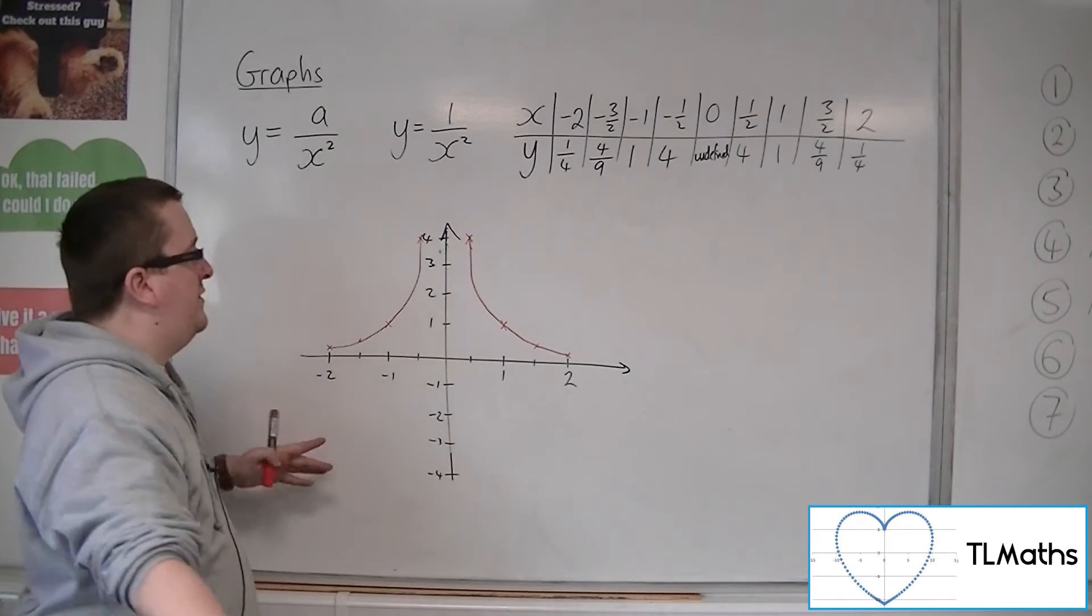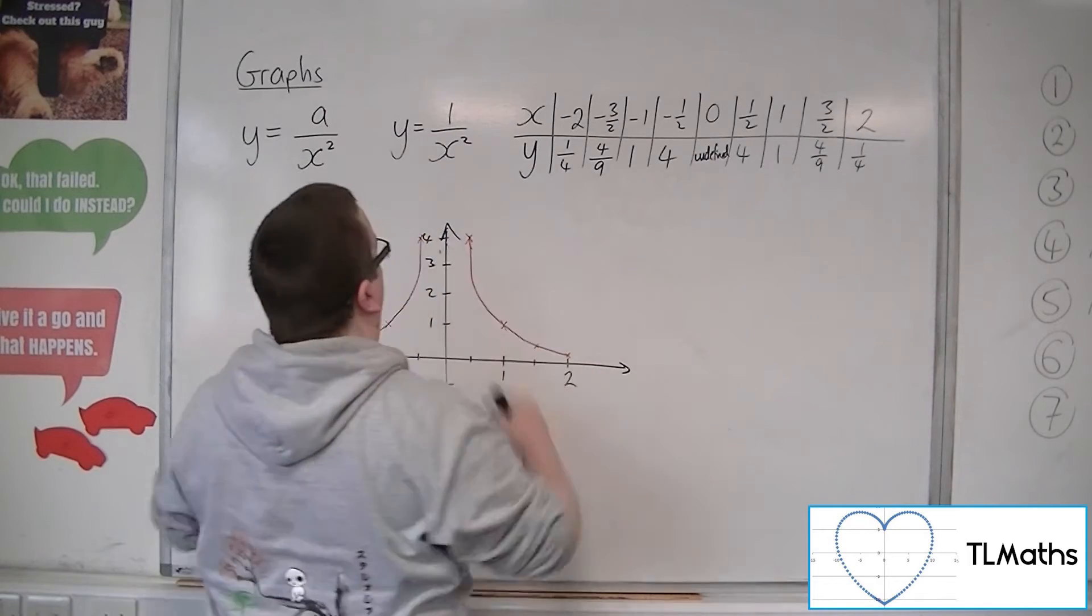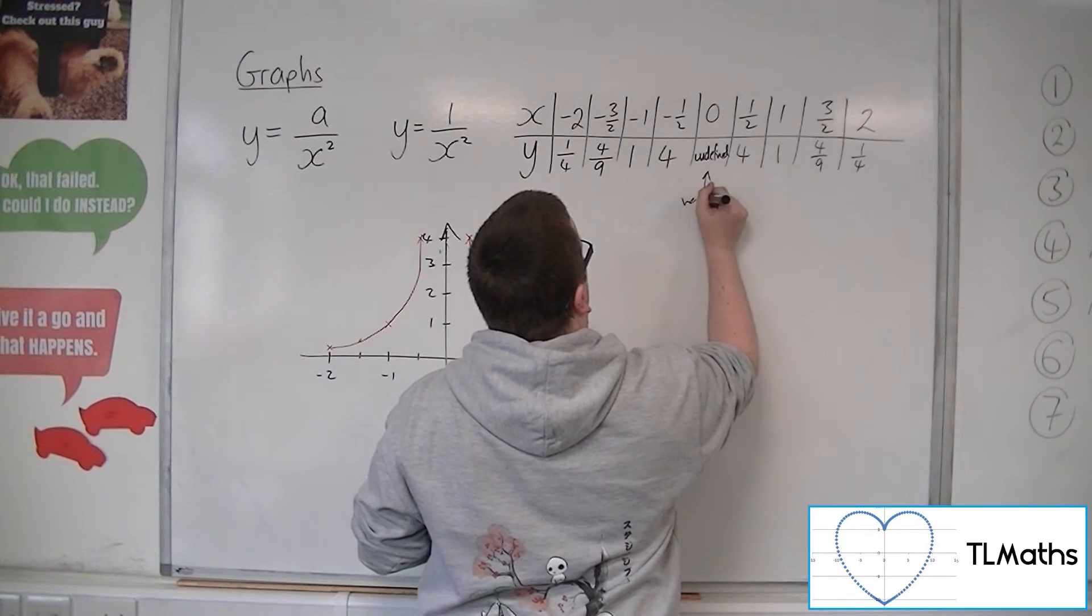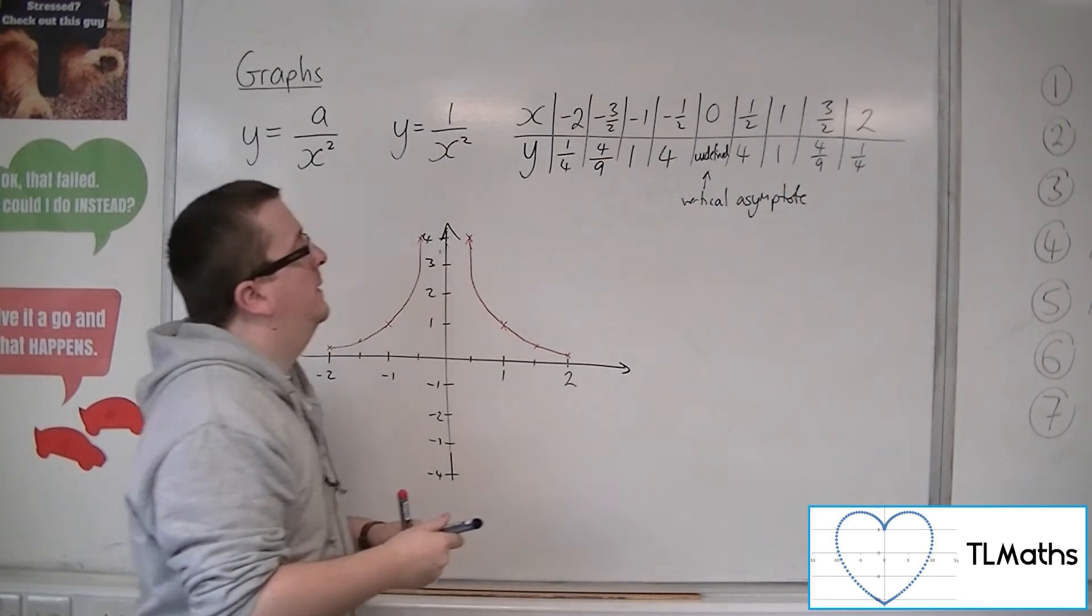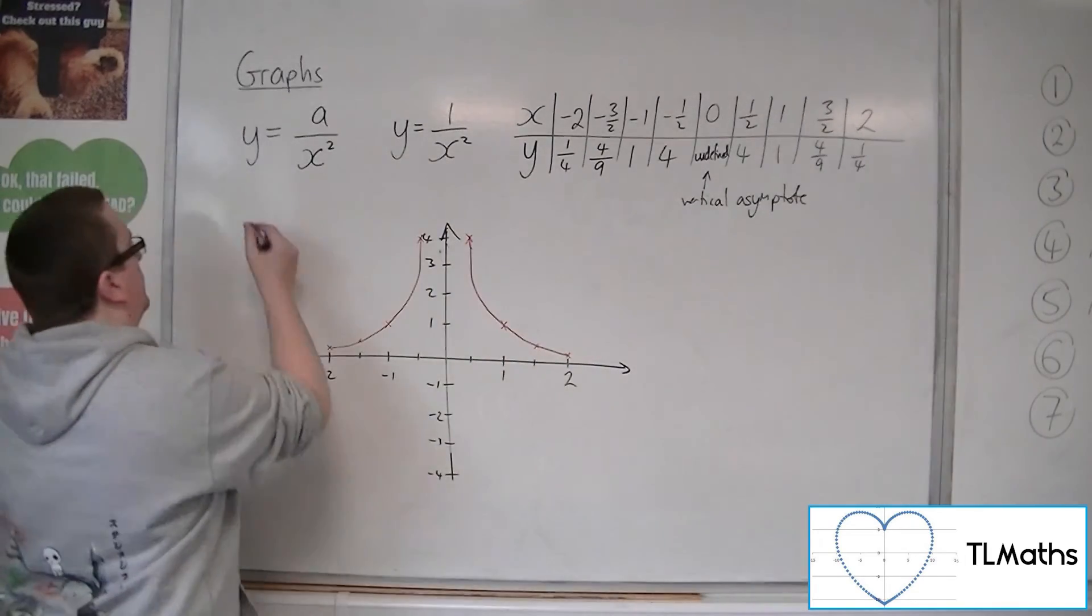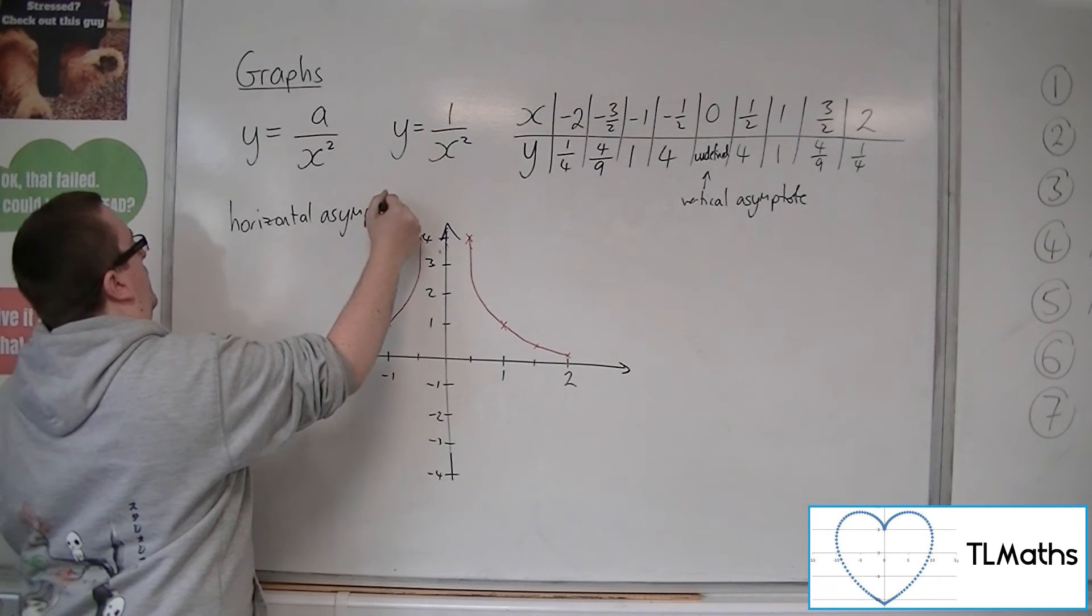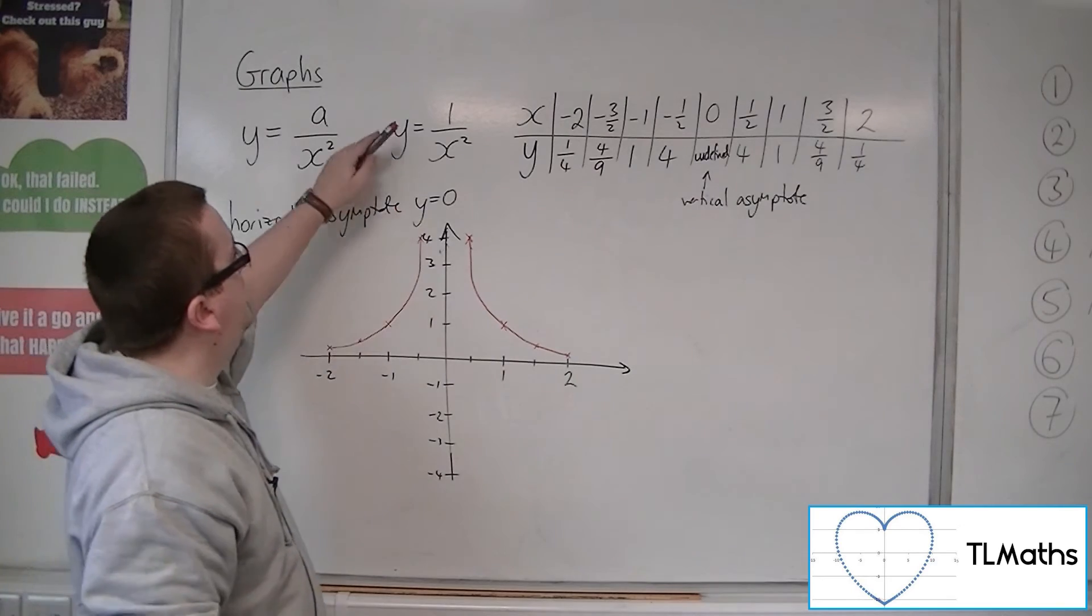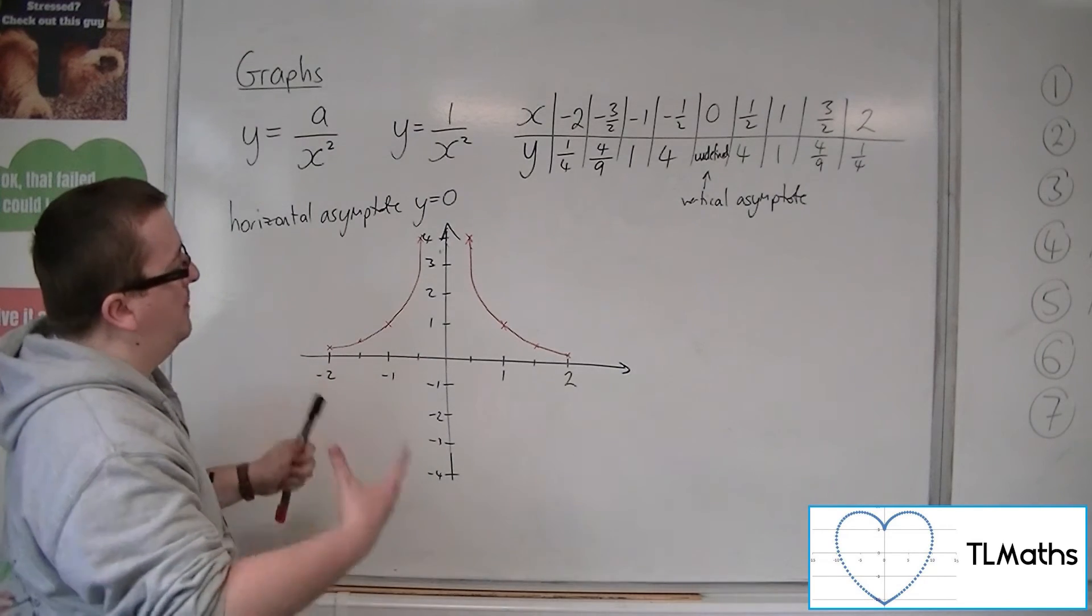What you have is a curve that becomes very steep as it approaches the y-axis, so it has a vertical asymptote at x = 0, much like 1/x did. It also has a horizontal asymptote as the curve approaches the x-axis from both directions, because there's no way 1/x² could equal zero—no values of x would make it zero.